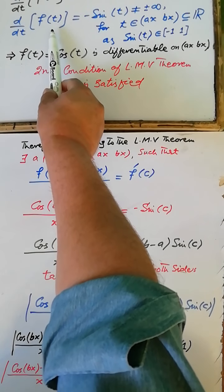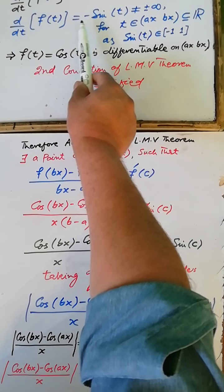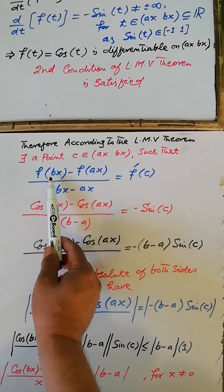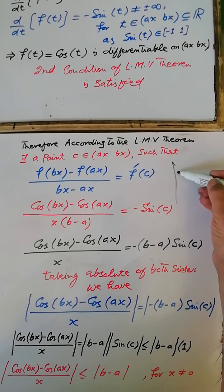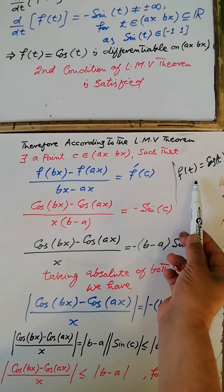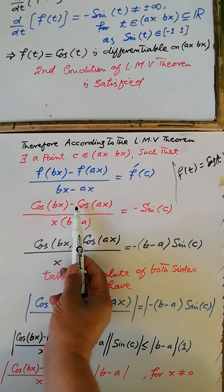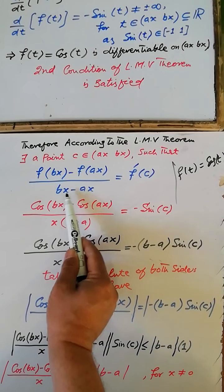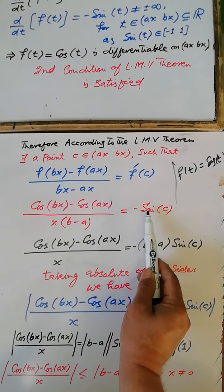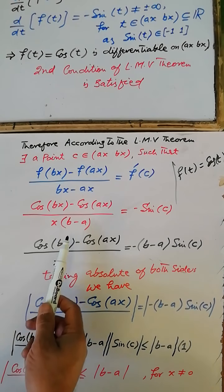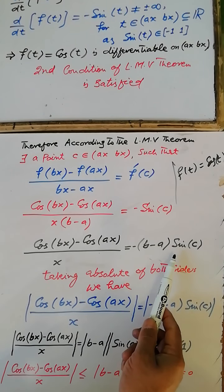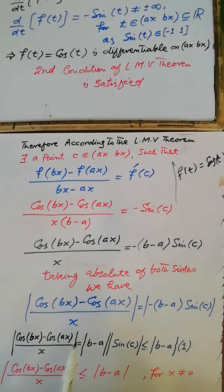The derivative of the function at point C is -sin(C). Since f(t) = cos(t), we have f(bx) = cos(bx) and f(ax) = cos(ax). So [cos(bx) - cos(ax)] / (bx - ax) = -sin(C). Since bx - ax = x(b - a), this gives [cos(bx) - cos(ax)] / x = -(b - a) sin(C).